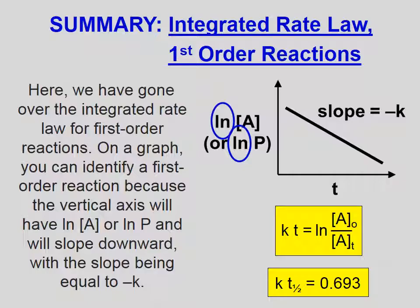Let's summarize. Here we have gone over the integrated rate law for first-order reactions. On a graph, you can identify a first-order reaction because the vertical axis will have natural log of [A] or the natural log of partial pressure, and it will slope downward with the slope being equal to opposite k. The vertical axis will have natural log of some reactant concentration or the natural log of the pressure of some reactant. It will slope down and to the right. The slope of that curve will be equal to opposite k, so from this graph we can find the rate constant. There are the two equations that govern for first-order reactions.